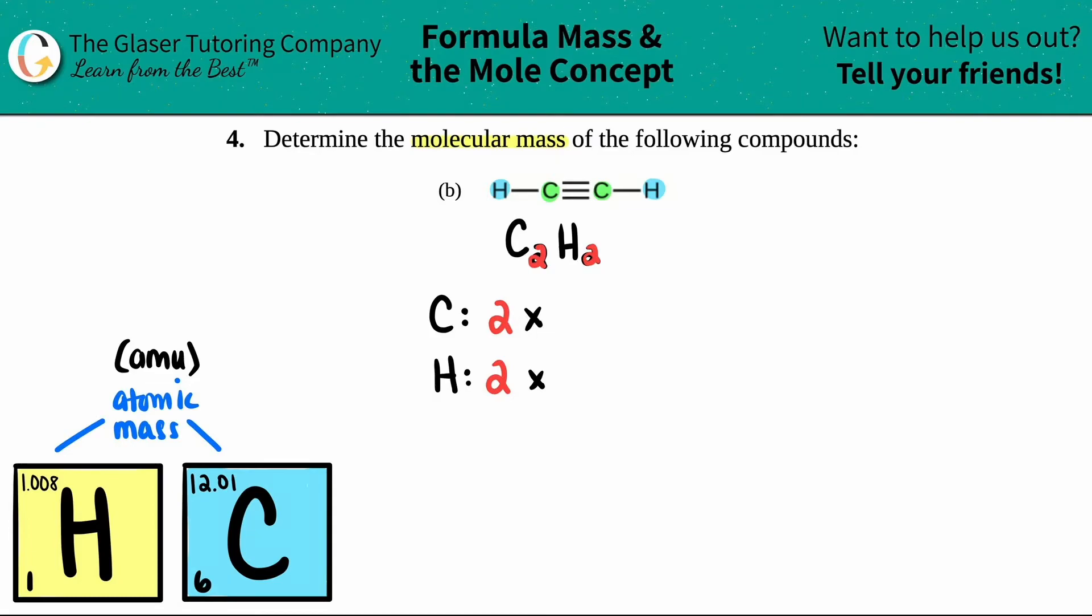So all I'm going to do is I'm going to just times by these numbers. So for carbon, it's 12.01 AMU. And then for hydrogen, it's at 1.008 AMU. And let's see what we get. So 2 times 12.01 is 24.02 AMU. So that's the total amount of carbon that I have. And then 2 times 1.008 is 2.016 AMU.